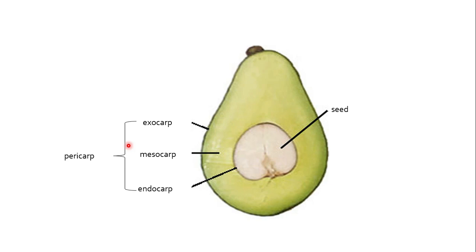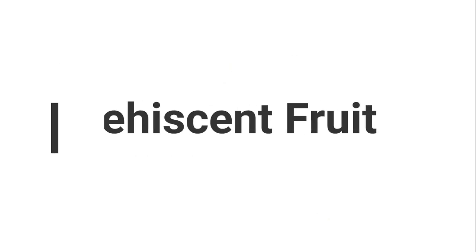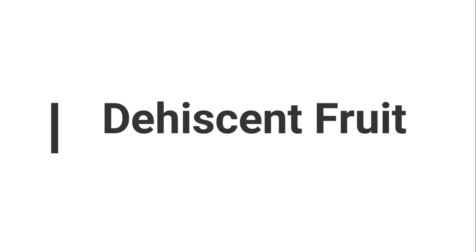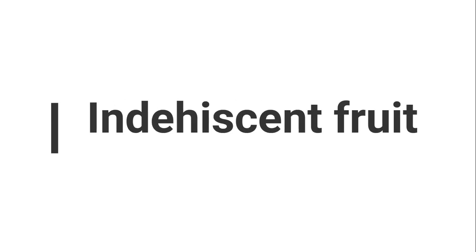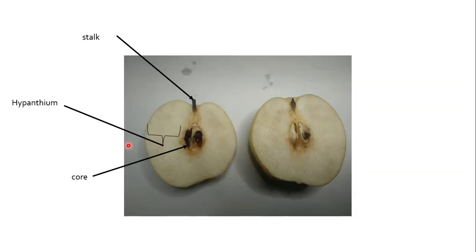Fruits are also classified depending on their types. We have what we call dehiscent fruit — meaning these fruits release their seeds into the environment, for example, peas. Then we have indehiscent fruits, which rely on decay to release their seeds — for example, peaches, avocado, apple, and so on. Here in pears, we can see there is a stalk where it attaches to the stem of the plant. Then we have what we call the hypanthium, which is the fleshy and edible part of the pear. And we have what we call the core, where the seeds are located. So again, the parts differ depending on the type of fruit.